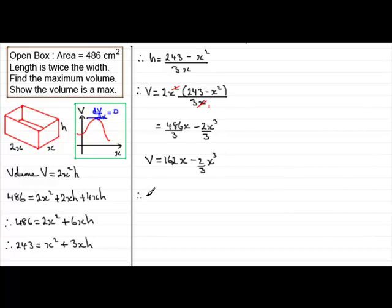So we need to find dv by dx first of all. So if we differentiate this in the usual way, dv by dx, it's going to equal 162 here. And then if we differentiate this term, we're going to get minus 2x². Now we know then that at stationary points, at stationary points, we know that dv by dx equals 0. And what's that going to mean? It's going to mean that this equation, therefore 162 minus 2x², that's got to equal 0.